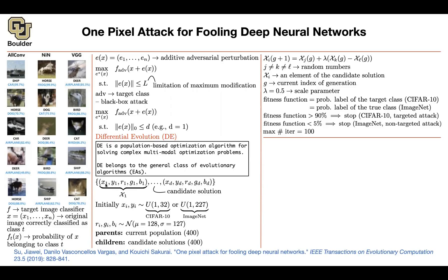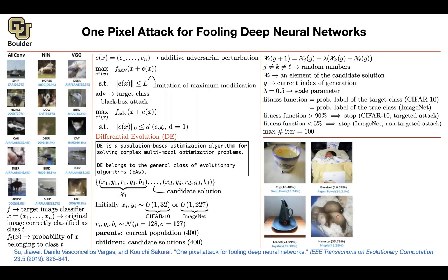The core idea is that this is a complex optimization problem where evolutionary algorithms are the natural choice — you don't have access to the network function or gradients. It's a black box attack where you're only allowed to change one pixel, or a few pixels. Results show you can turn a cop image into a soup bowl, a bassinet into a paper towel by changing one pixel. On CIFAR-10, across multiple network architectures including VGG and all-convolutional networks, both targeted and non-targeted attacks reduce accuracy, with attack confidence reflecting the probability assigned to the target class.